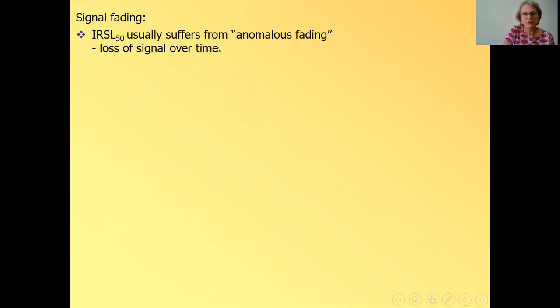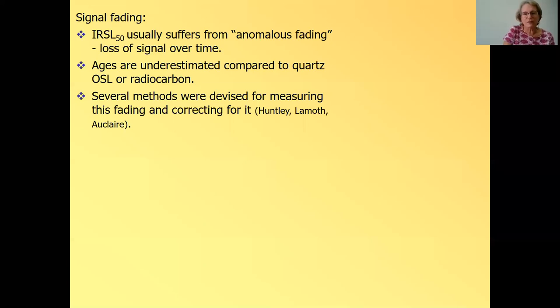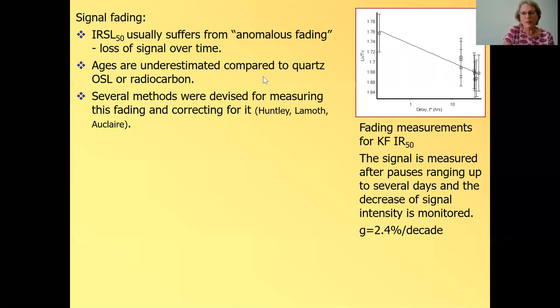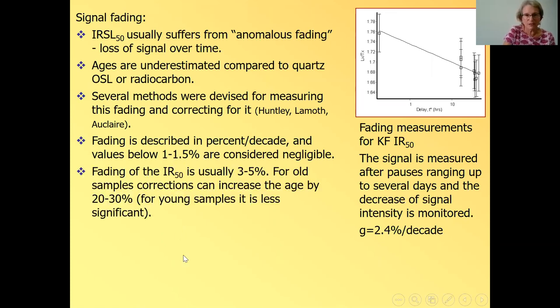And IRSL 50 signal measured at 50 degrees usually suffers from what we call anomalous fading, loss of signal over time. And the ages are severely underestimated when compared to quartz from the same sample, or to radiocarbon. And over the years, several methods were devised for measuring this fading and correcting for it. And it's described in percent per decade and values, which are lower than one to one and a half percent are considered negligible. But when you measure the fading for the IR50, it's usually pretty high, three to five percent. I've seen also values of seven percent. So these corrections can increase the age by 20 to 30 percent.